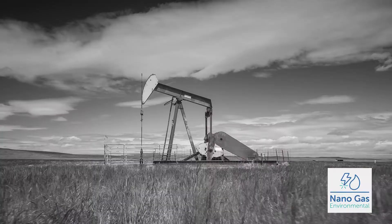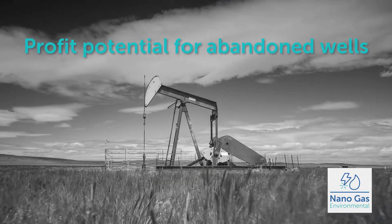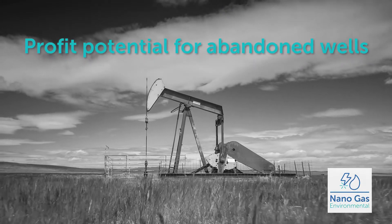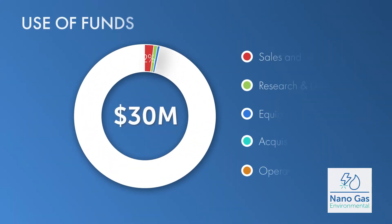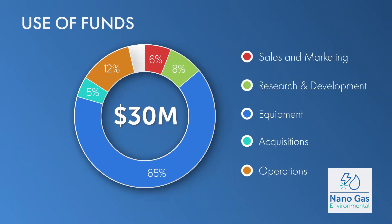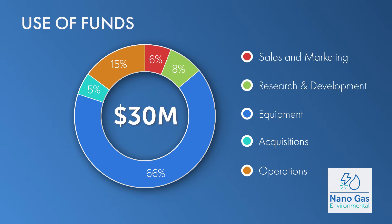There are 22,000 abandoned wells in Oklahoma and Texas that are emitting methane, and you can get more oil out of them without obtrusive chemicals and fracking — the things that are worse for the environment. And that's a very big deal.